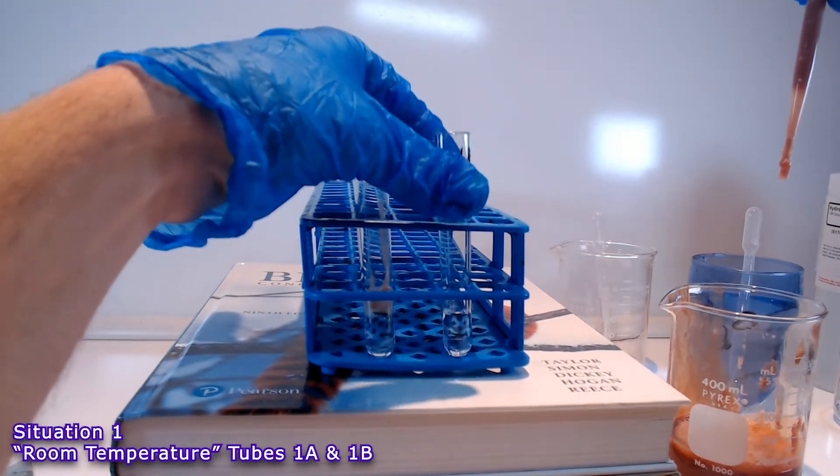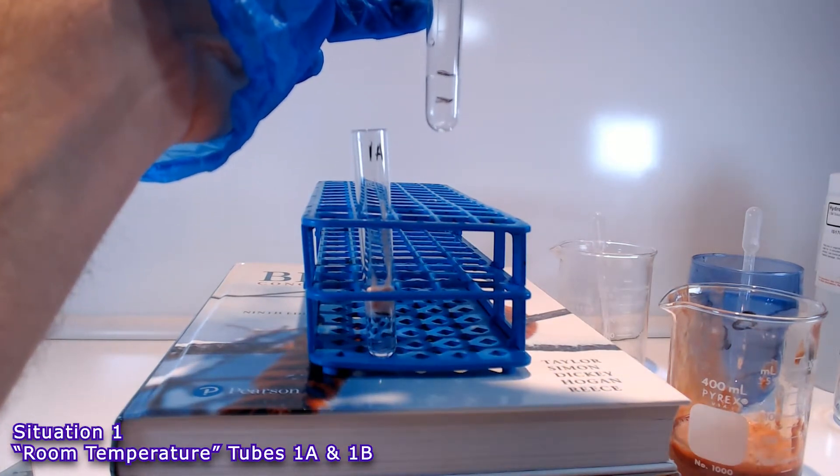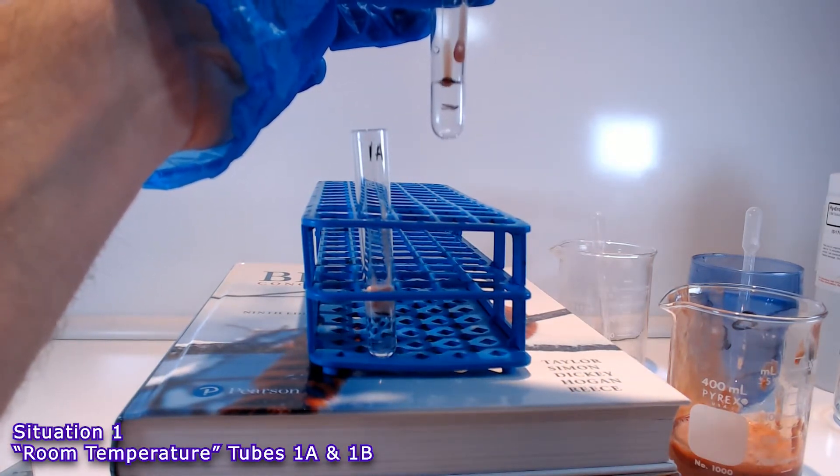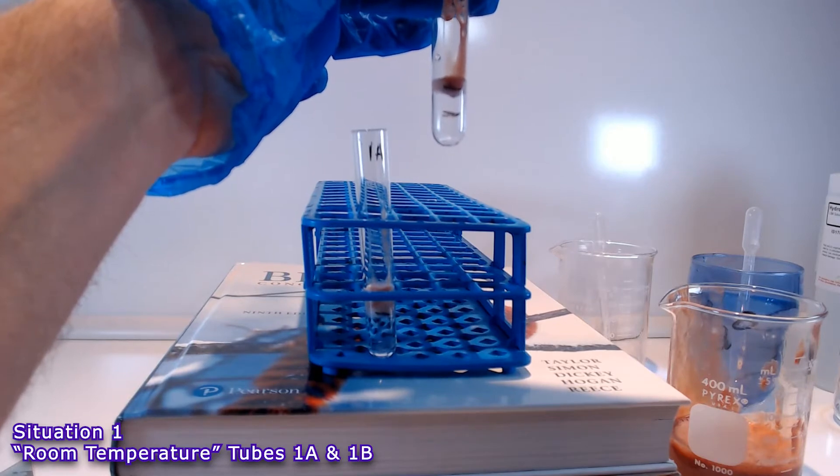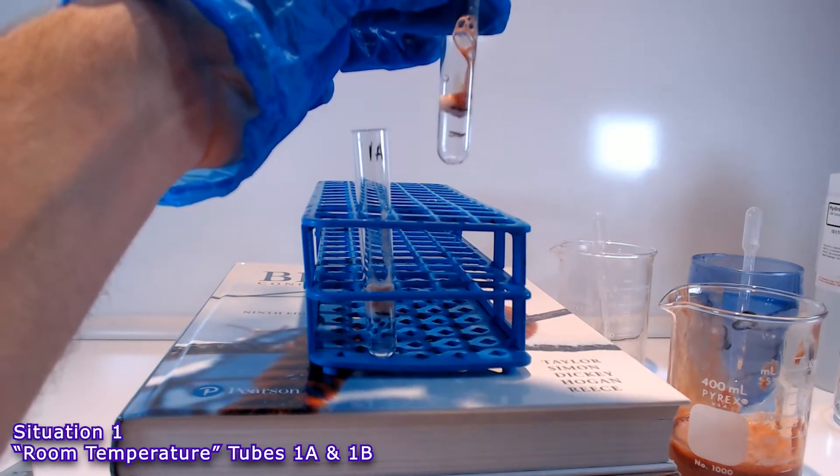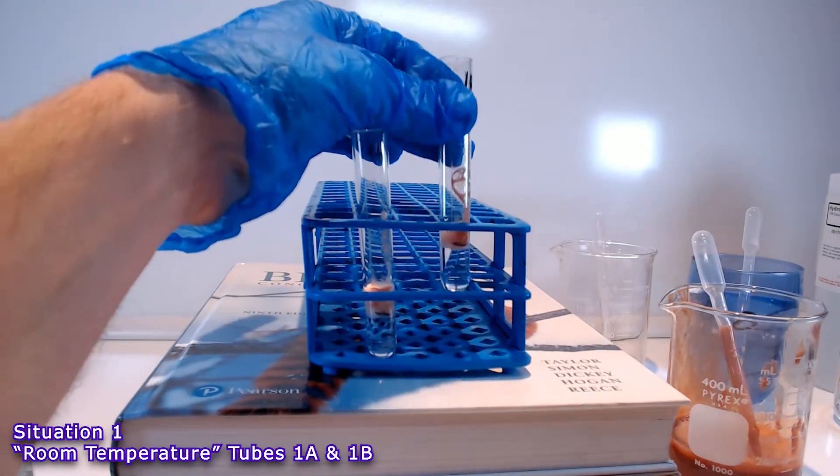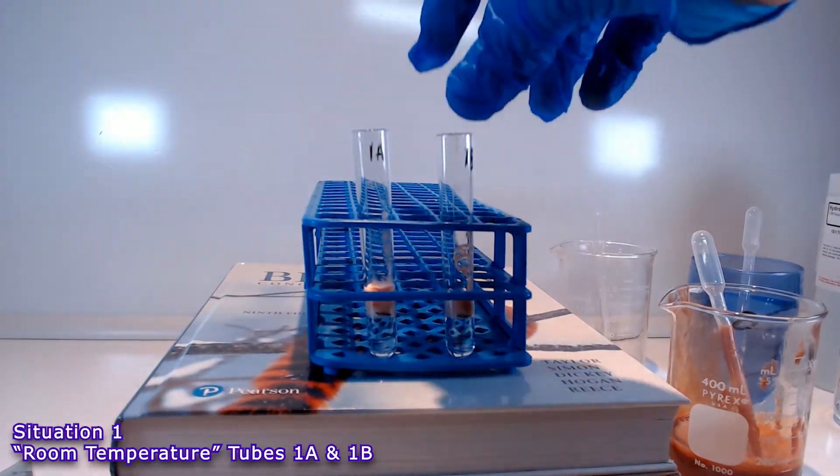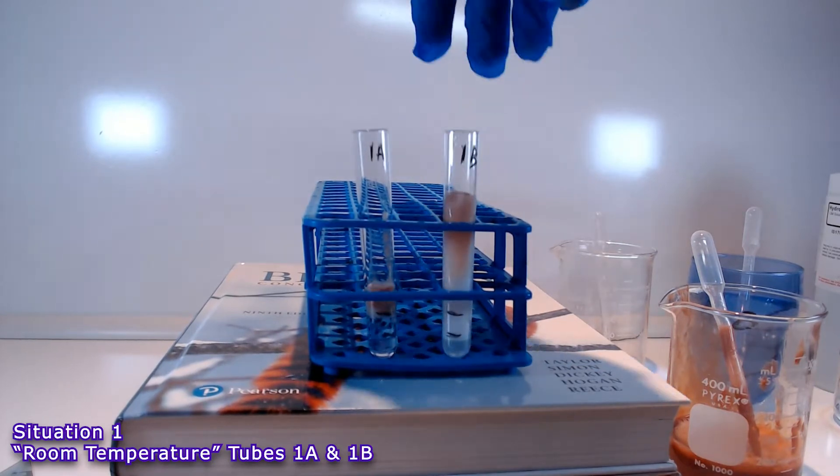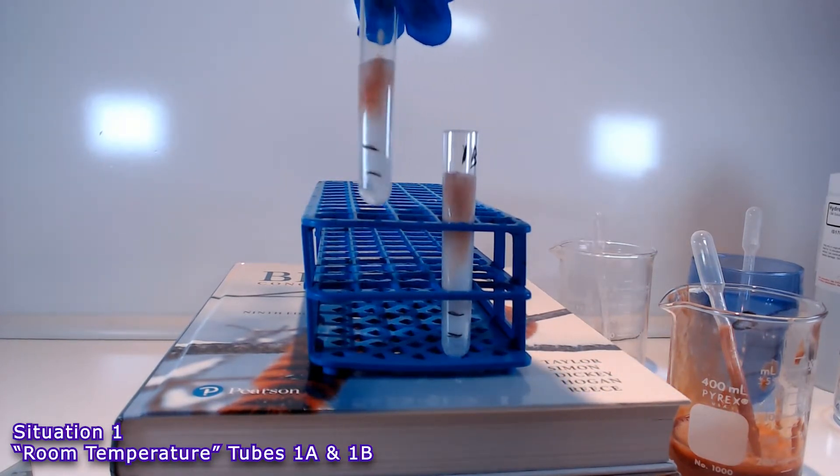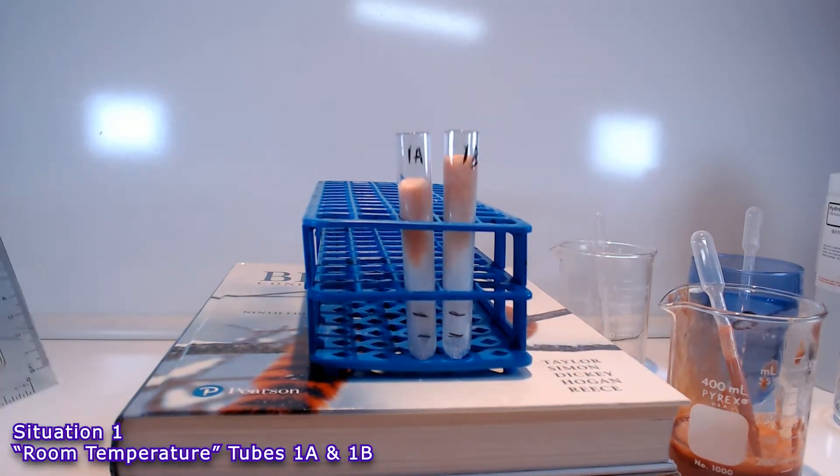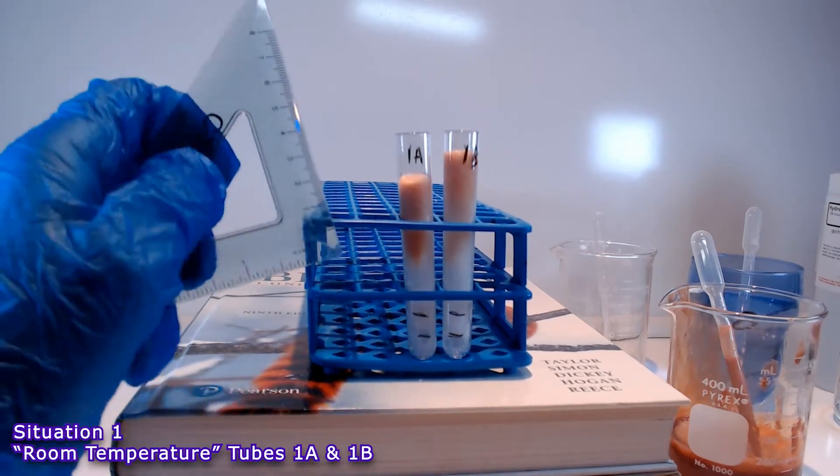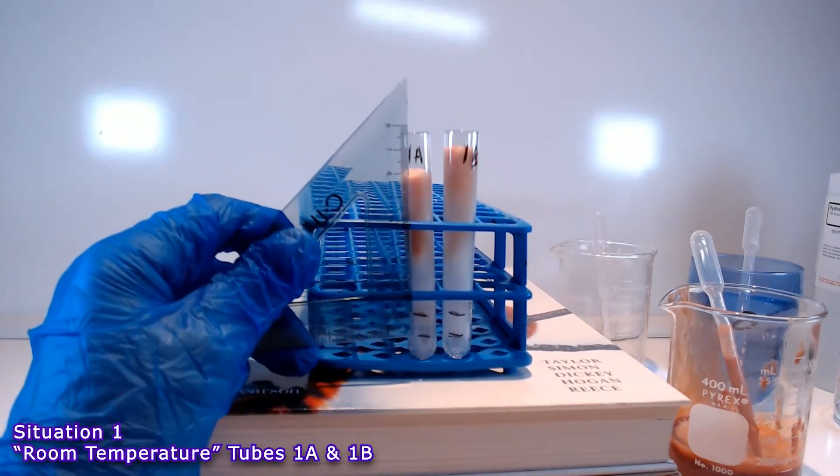You can already see some bubbles beginning to form. Refer back to the lab protocol to understand what those bubbles represent. Now in order to make sure that the substrate and enzyme are mixing, let's agitate the solution a little bit, and you can see that not only do we form a column of bubbles, but that the column forms very rapidly as well.